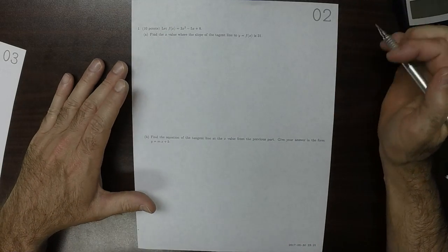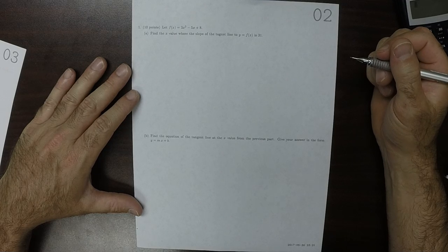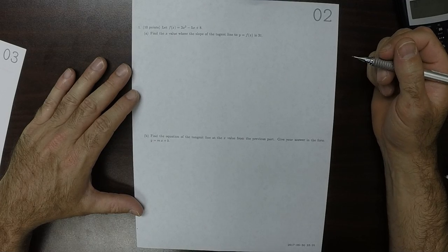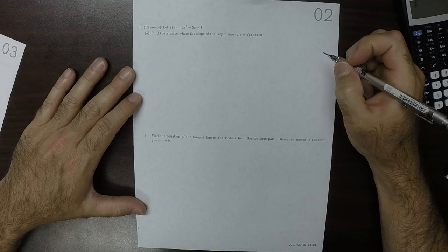This is the solution to written homework 2. Find the x value where the slope of the tangent line to y equals f of x is 31.